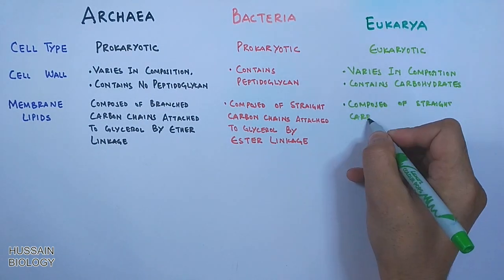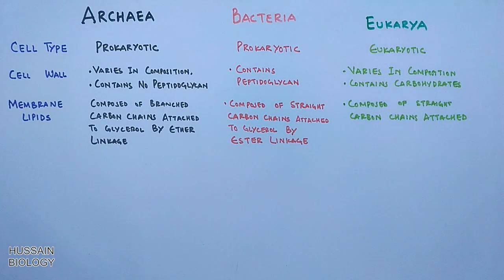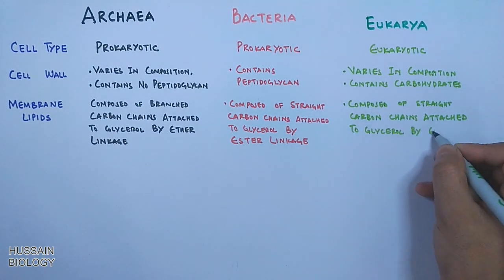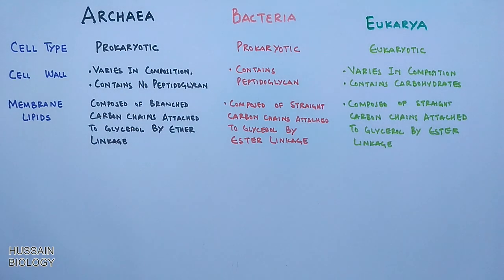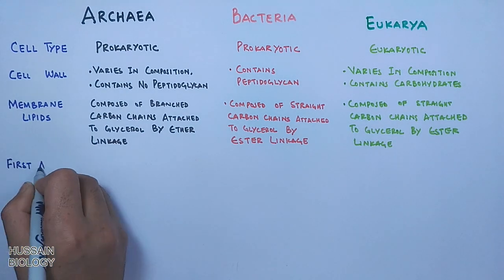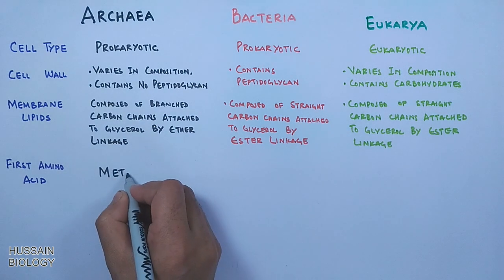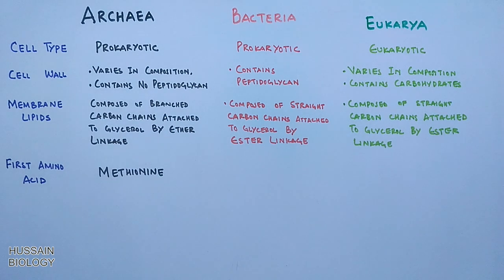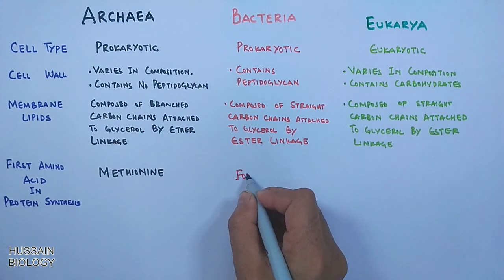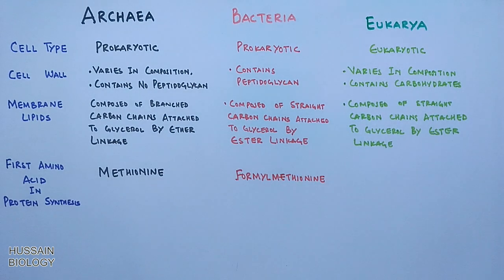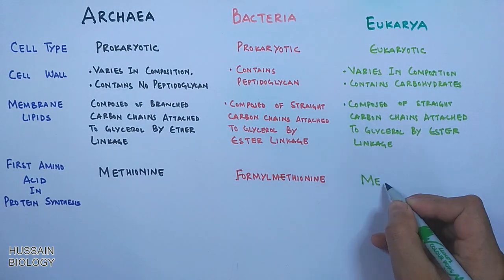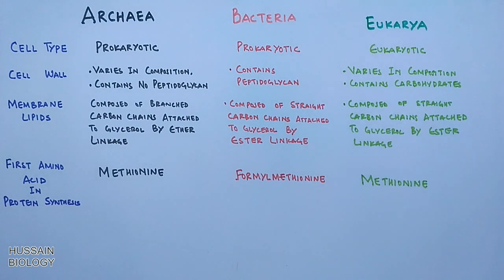In Eukarya, it is the same as in Bacteria — that is, ester linkage. Then we look at the first amino acid in protein synthesis: in Archaea it is methionine, in Bacteria it is formyl-methionine, and in Eukarya it is methionine, like in Archaea.